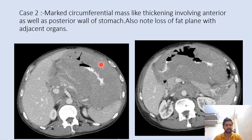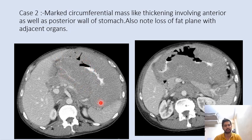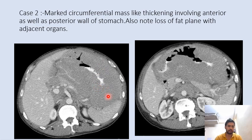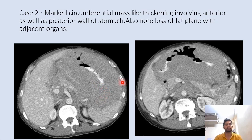In case two, this is the gastric lymphoma involving both the anterior and posterior wall, with marked circumferential thickening. We can still see contrast passing through the lumen, so again, obstruction is a rare feature in gastrointestinal lymphomas. We can also see loss of fat planes.